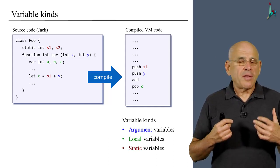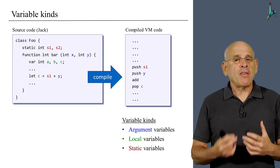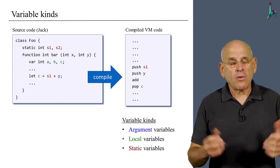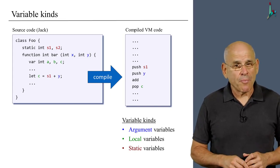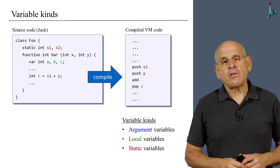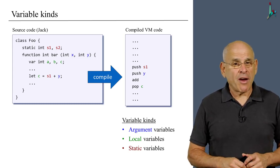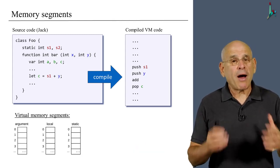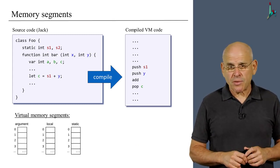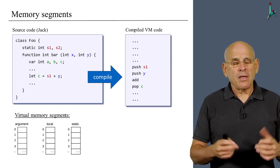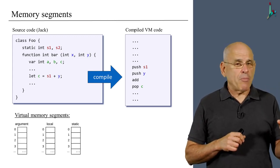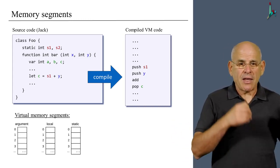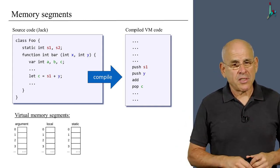These different roles of variables is something that we also want to preserve in the virtual machine abstraction. If we don't preserve it, things will go wrong in the execution of the program. So we need some mechanism to record the different roles of variables, and we do this by introducing the notion of memory segments, which is part of our VM abstraction. Our stack machine is going to be equipped not with a single memory segment, but rather with several memory segments, with names like argument, local, static, and a few more.